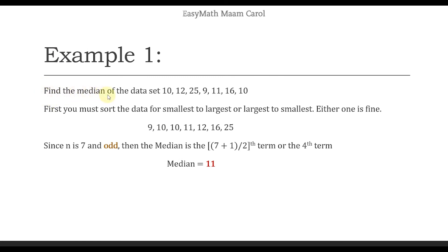For example, you are asked to find the median of the dataset: 10, 12, 25, 9, 11, 16, 10. Ang ginagawa ng system or ng mga app ay first, it must sort the data from smallest to largest or from largest to smallest — either one is okay. Kahit alin dyan yung gusto mong sorting. So, for example, it's already sorted: pinakamaliit hanggang sa pinakamalaki. Now, since our n is 7 — 1, 2, 3, 4, 5, 6, 7.